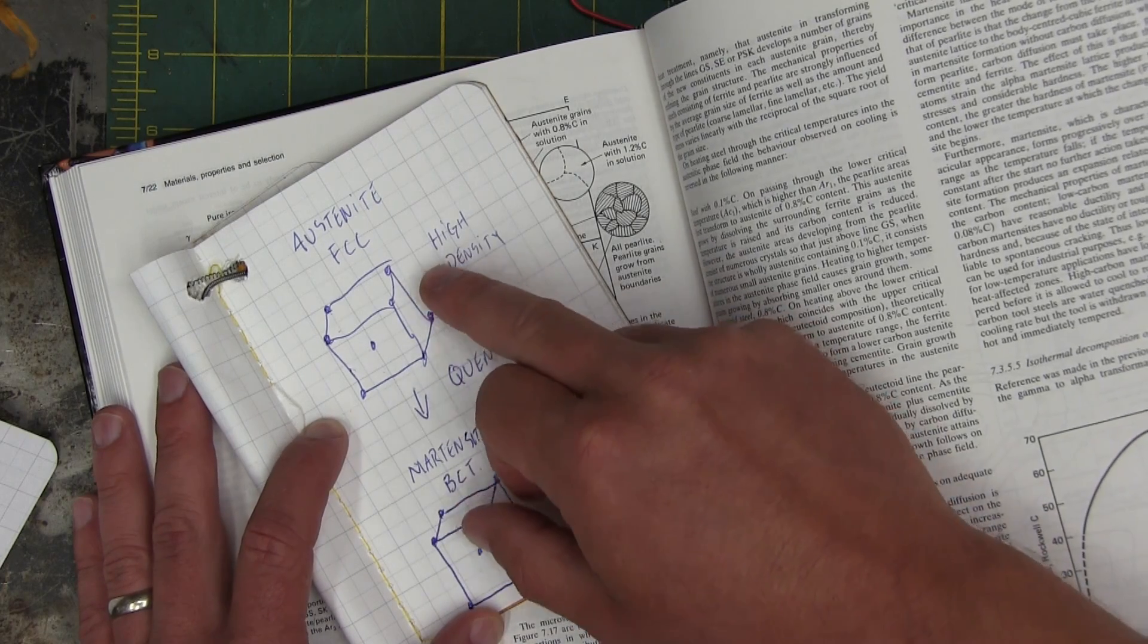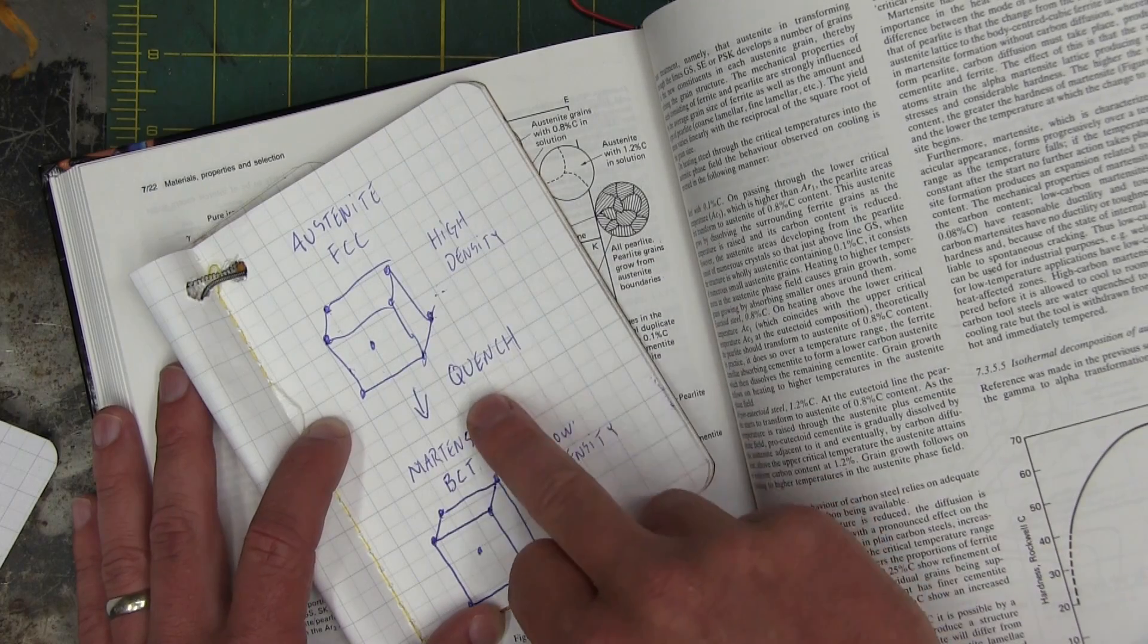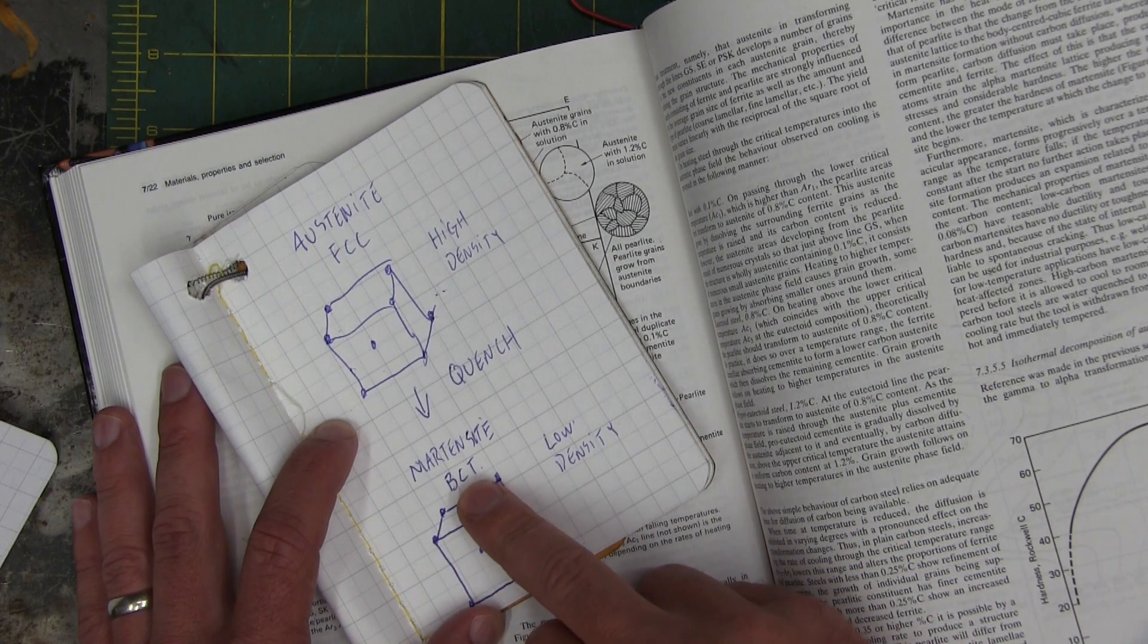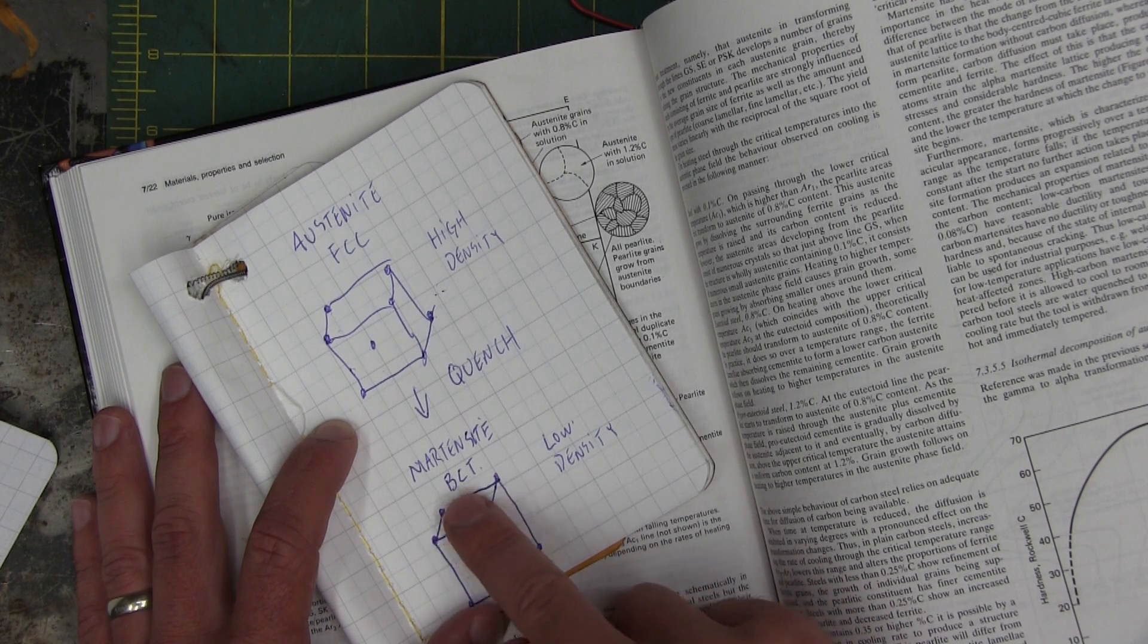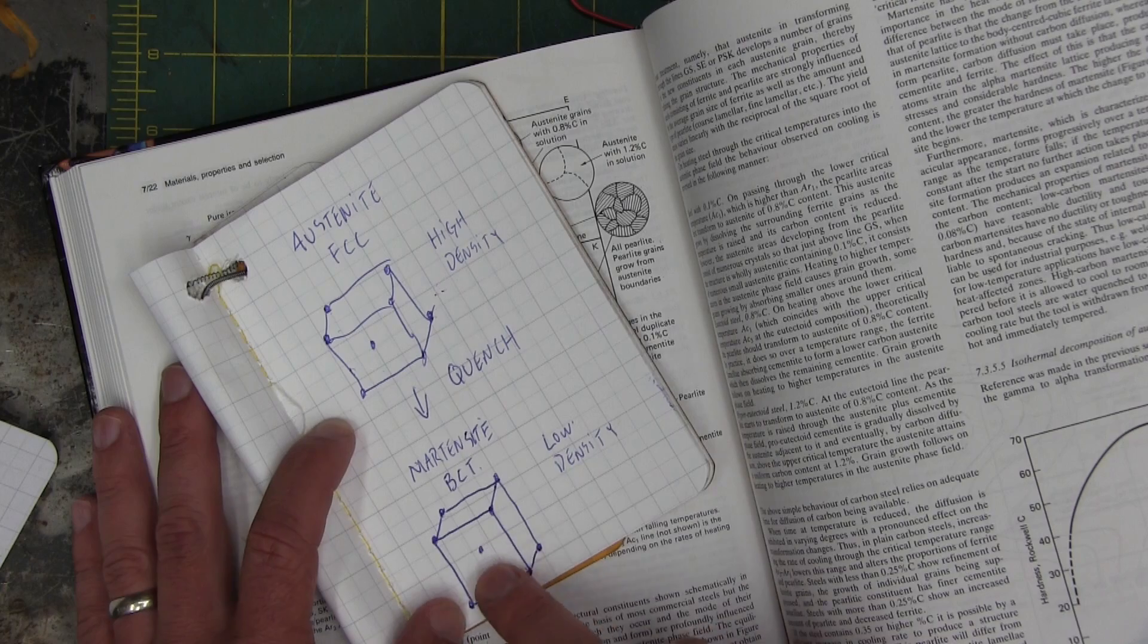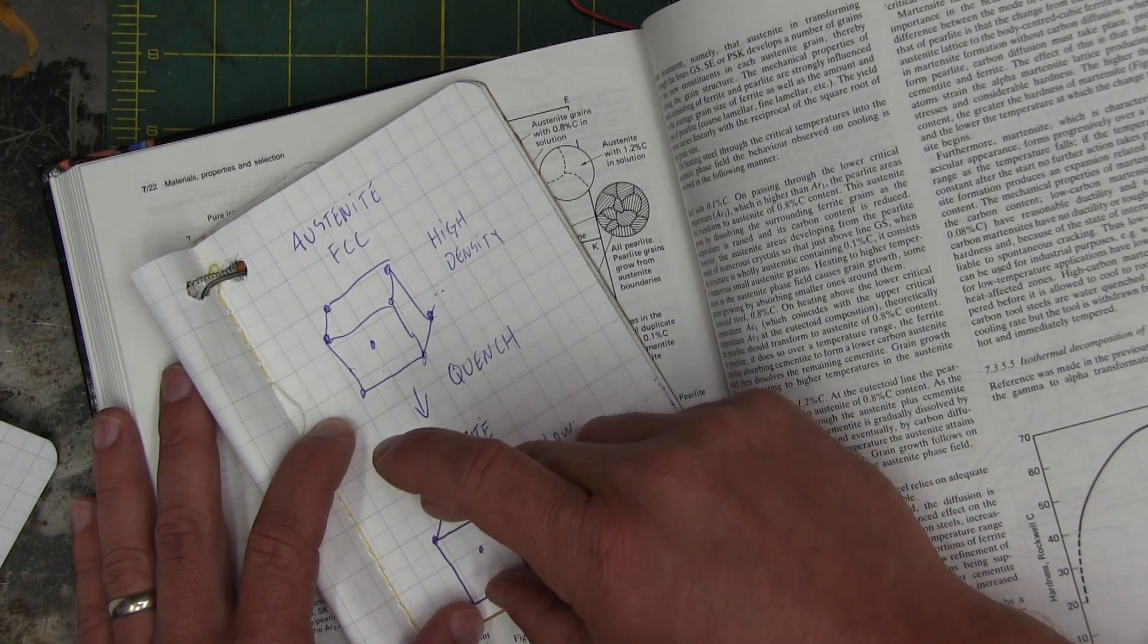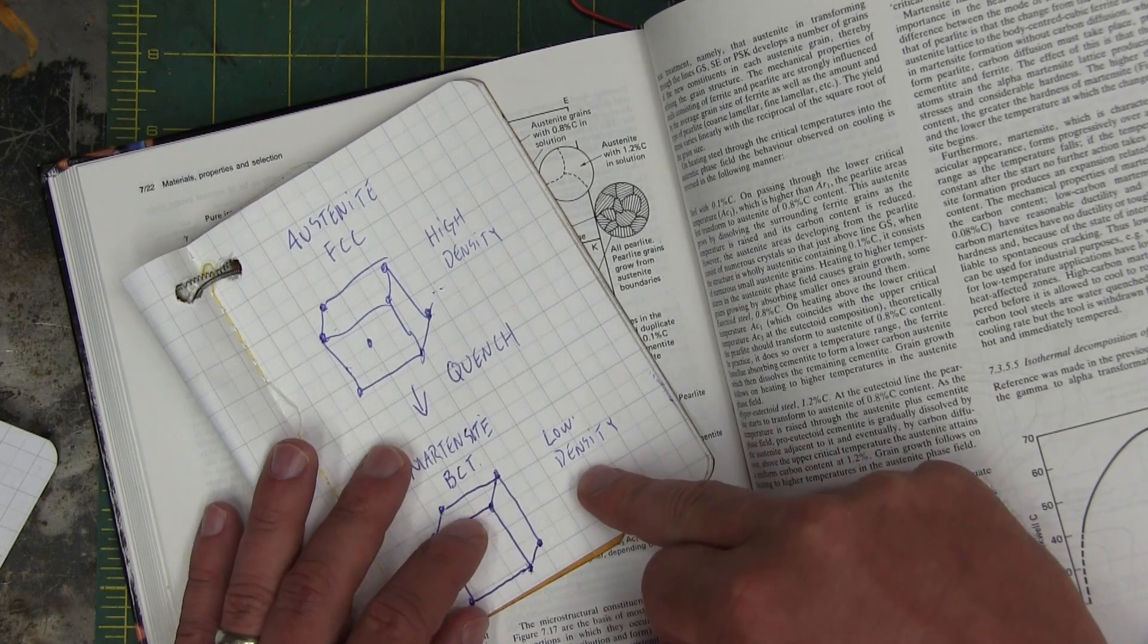We go from a high density, face-centered cubic austenite to a low-density body-centered tetragonal martensite. And what that is, it's not a cube now. This front face is a rectangle. It's elongated and it's also lower density. We haven't allowed a whole bunch of the carbon to get out of there. So this is under a great deal of strain.